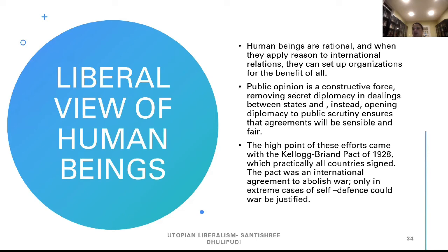The liberal view of human beings: human beings are rational and they apply reason to international relations. They can set up organizations for the benefit of all. Public opinion is a constructive force; removing secret diplomacy and instead opening diplomacy to public scrutiny ensures that agreements will be sensible and fair. The high point of these efforts came with the Kellogg-Briand Pact of 1928, which practically all countries signed. The pact was an international agreement to abolish war; only in extreme cases of self-defense could war be justified. But it did not work.